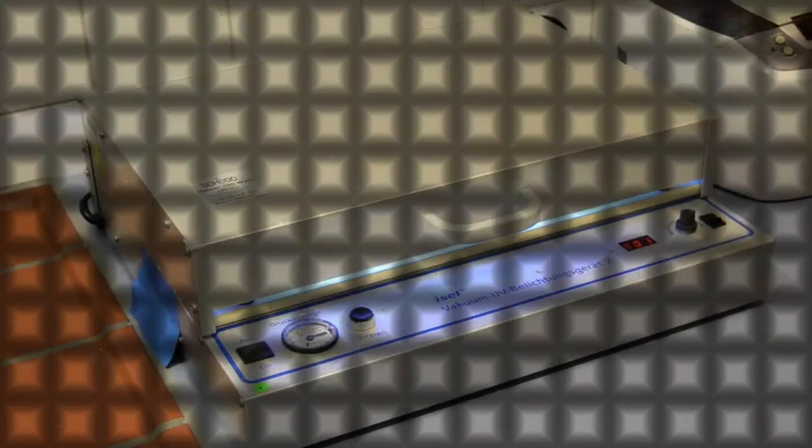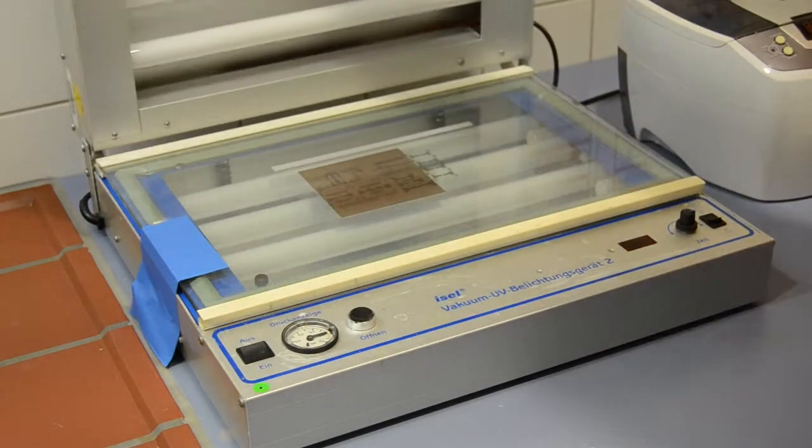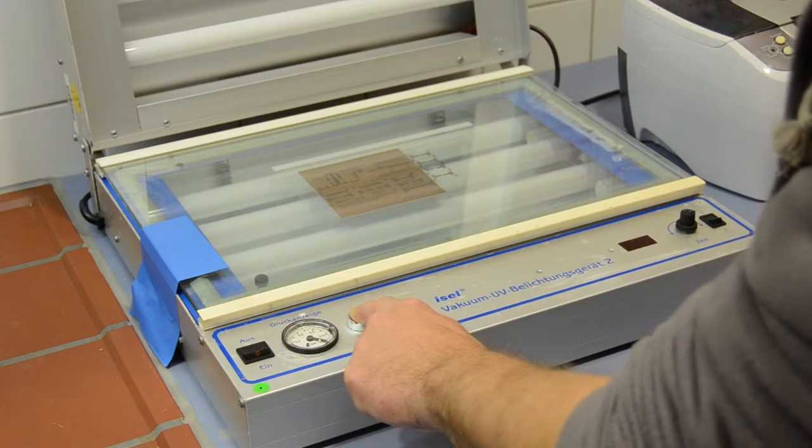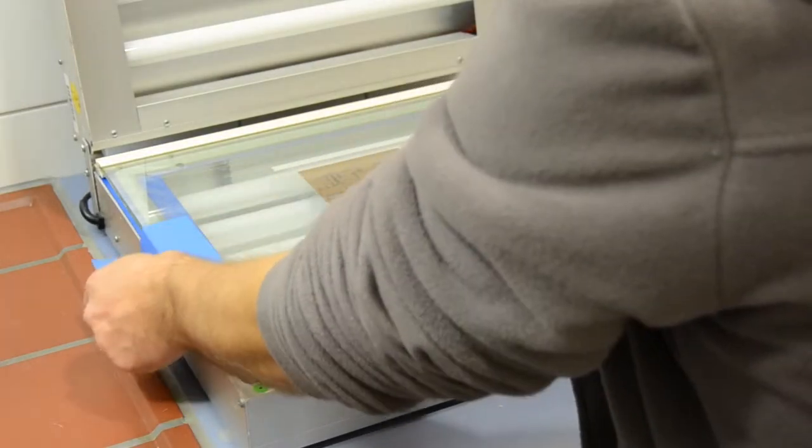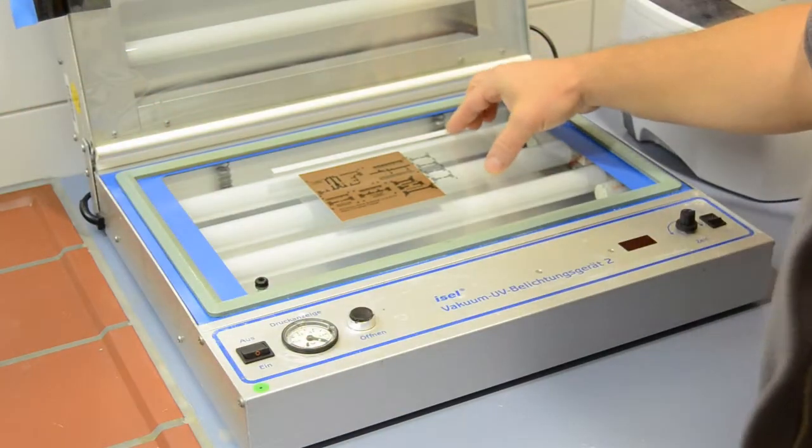The UV light is applied for about 240 seconds, and after that the photoresist layer is exposed. We open the lid, release the vacuum, and remove the circuit.